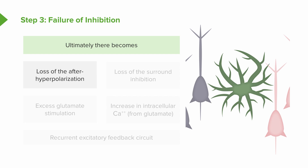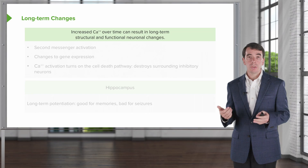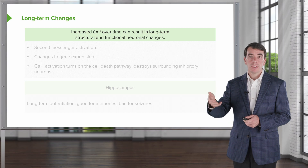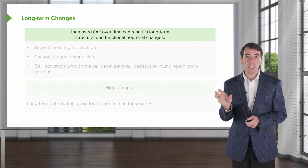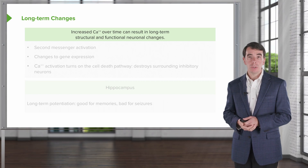We see loss of after-hyperpolarizations — loss of that refractory phase — and loss of surround inhibition. All those normal neurons that drive inhibitory tone around this ictal nidus are lost and reduced. There's excess glutamate stimulation: too much glutamate is released by astrocytes and neurons, and we lose inhibitory tone with an increase in intracellular calcium. A recurrent excitatory feedback circuit is created. As a result of loss of inhibition, we get an excitatory circuit that drives subsequent seizure formation. Increased calcium over time results in long-term structural and functional changes in neurons to beget seizures — seizures beget seizures.